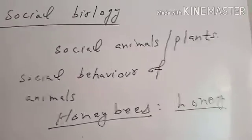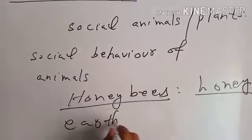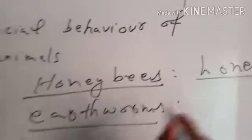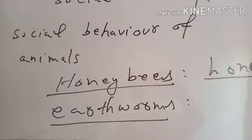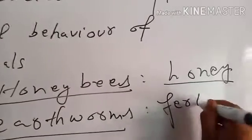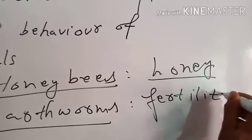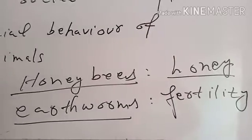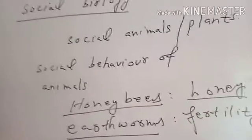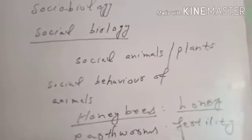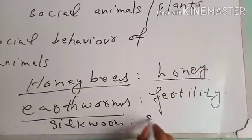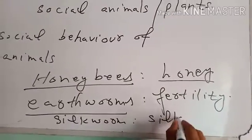Earthworms are also social organisms because they increase the fertility of soil and do not damage other organisms. Silkworm is social because it helps in the production of silk.